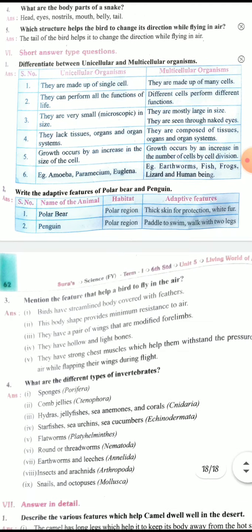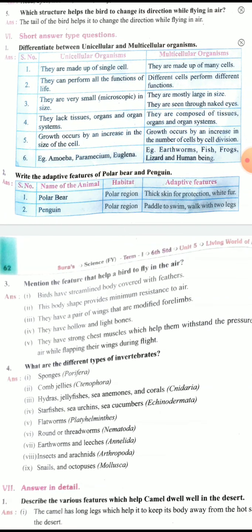Next short answer. First question: Differentiate between unicellular and multicellular organism. Unicellular organism: They are made up of single cell. Multicellular: They are made up of many cells. Second point: They can perform all the functions of life. Different cells perform different functions. Third point: They are very small in size. They are mostly large in size. They are seen through naked eyes.